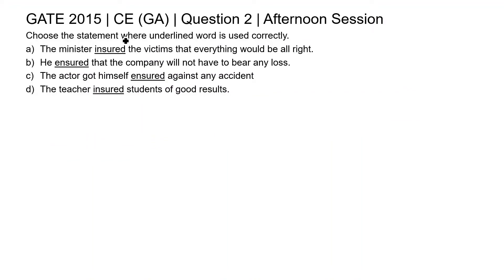This is question 2 of Civil Engineering General Aptitude section of Gate 2015 afternoon session. The task is to choose the statement where the underlined word is used correctly. In this question, four sentences are given and in each sentence an underlined word is given. We need to check whether this word is used correctly or not. First of all, let's understand the meaning of these words.